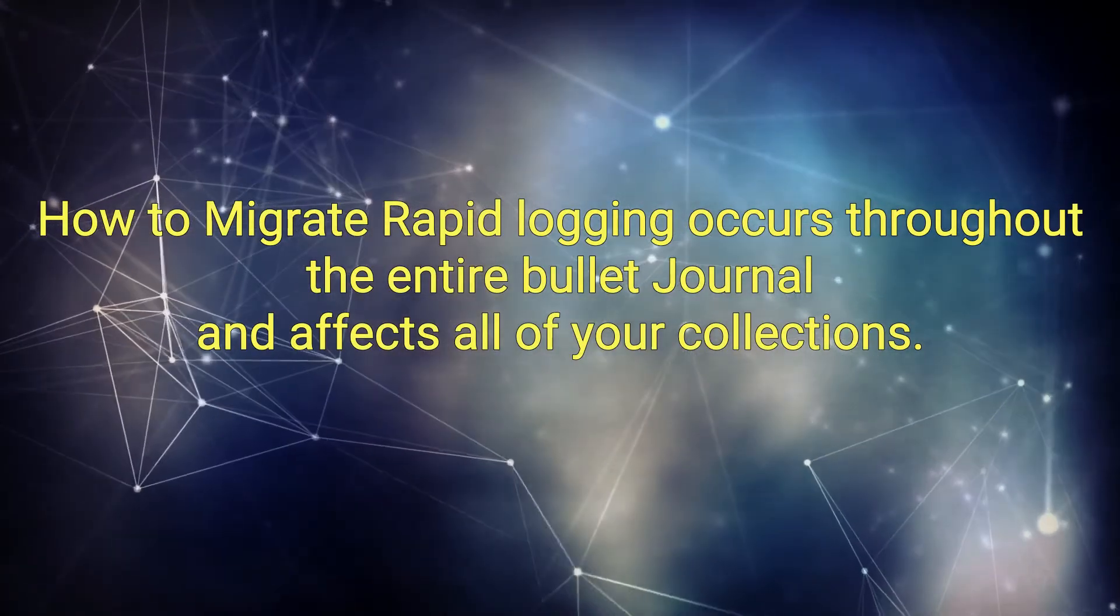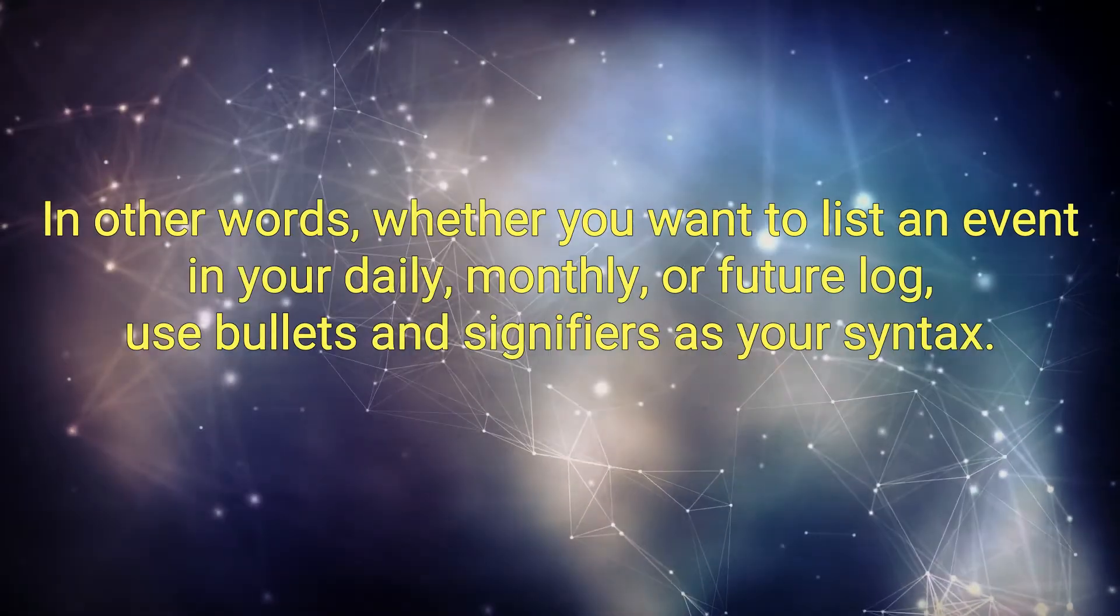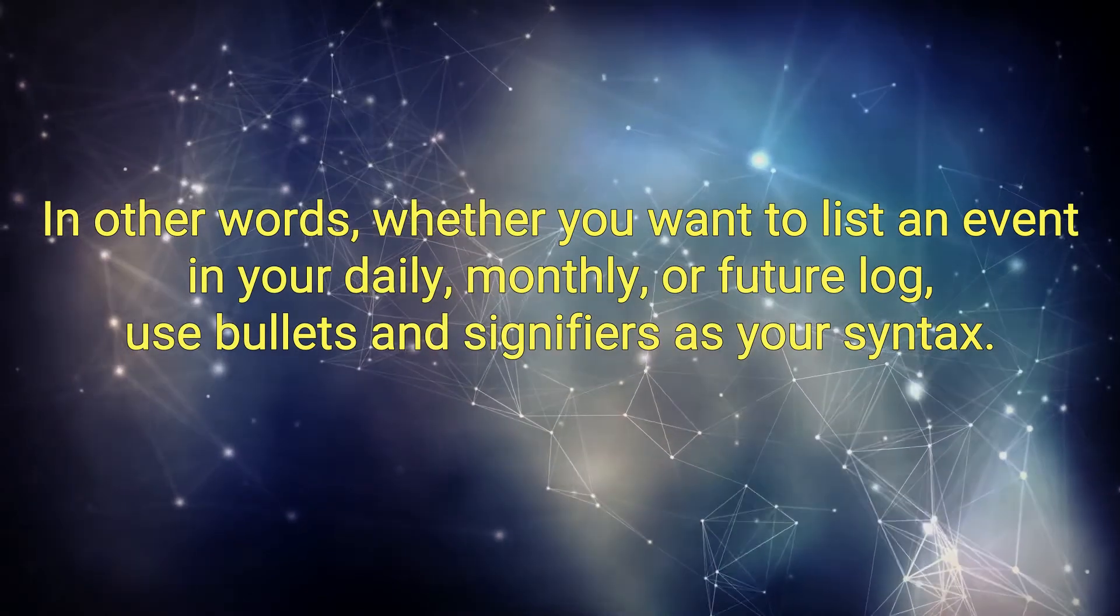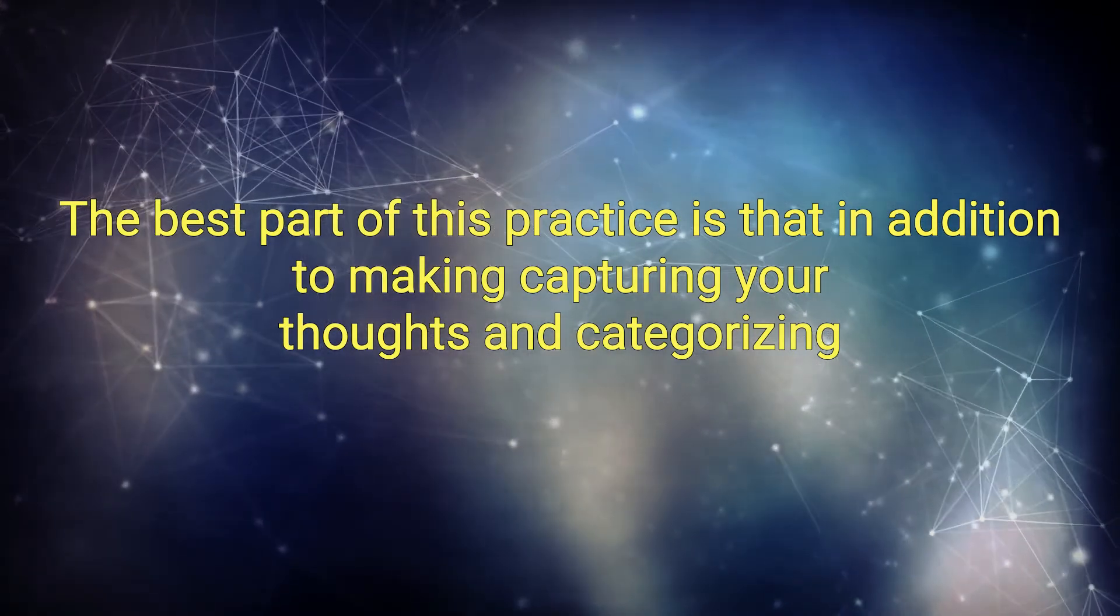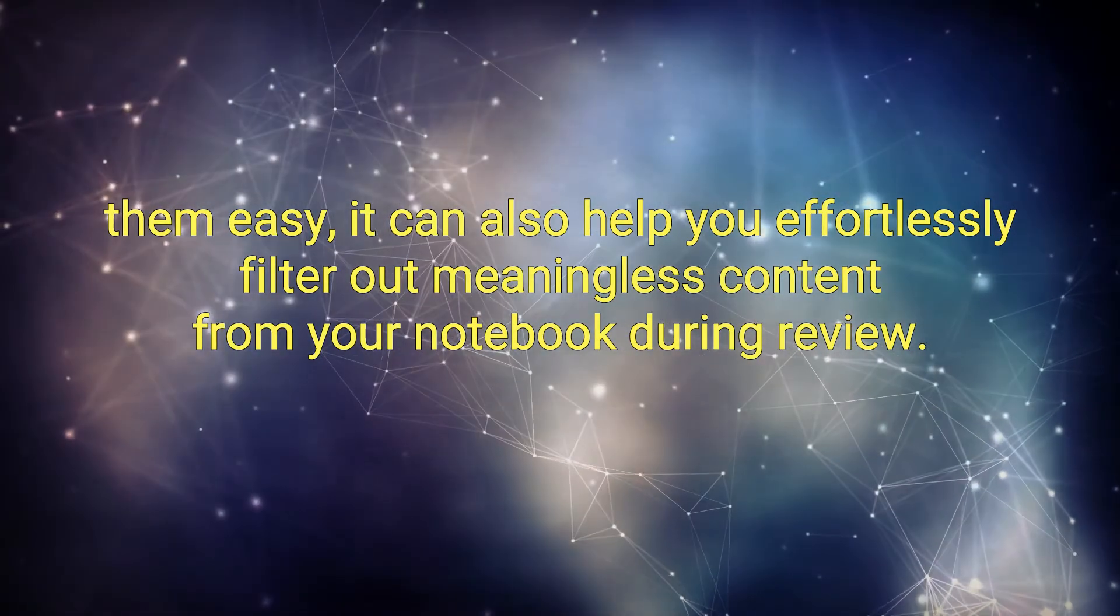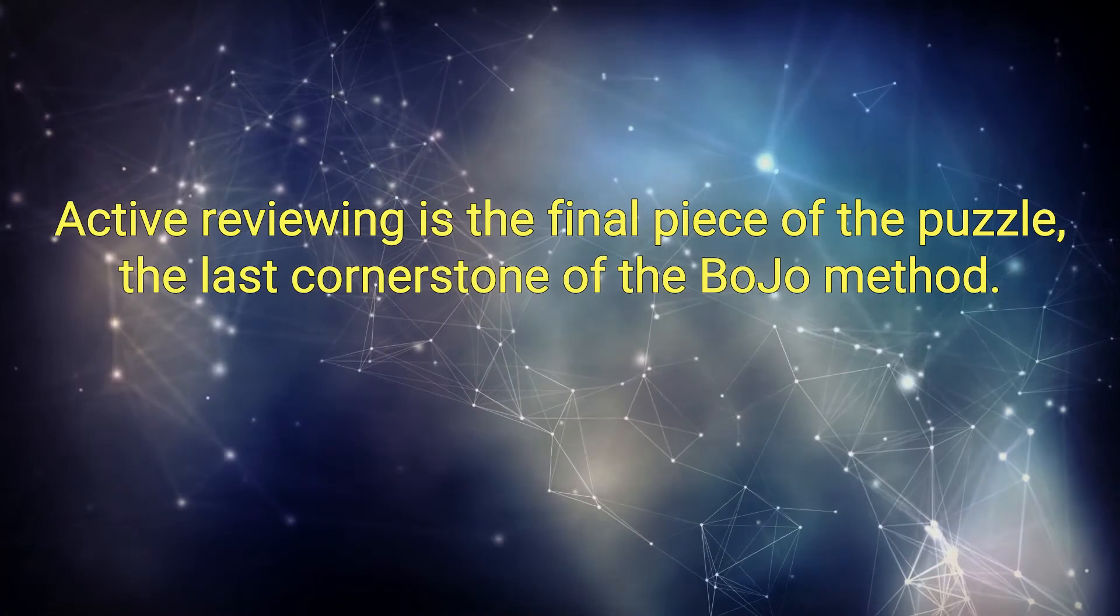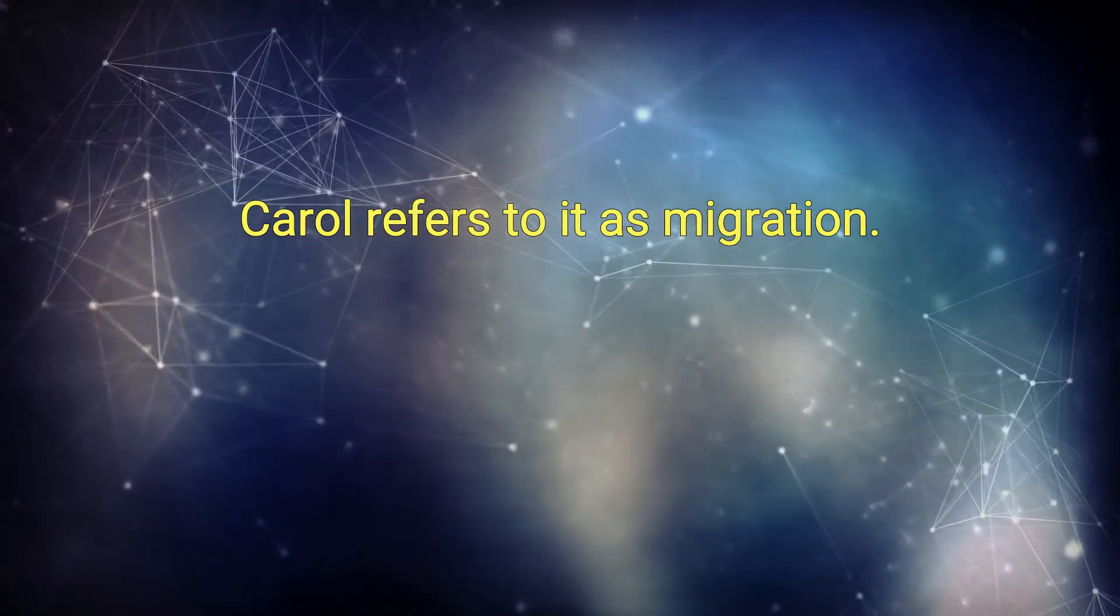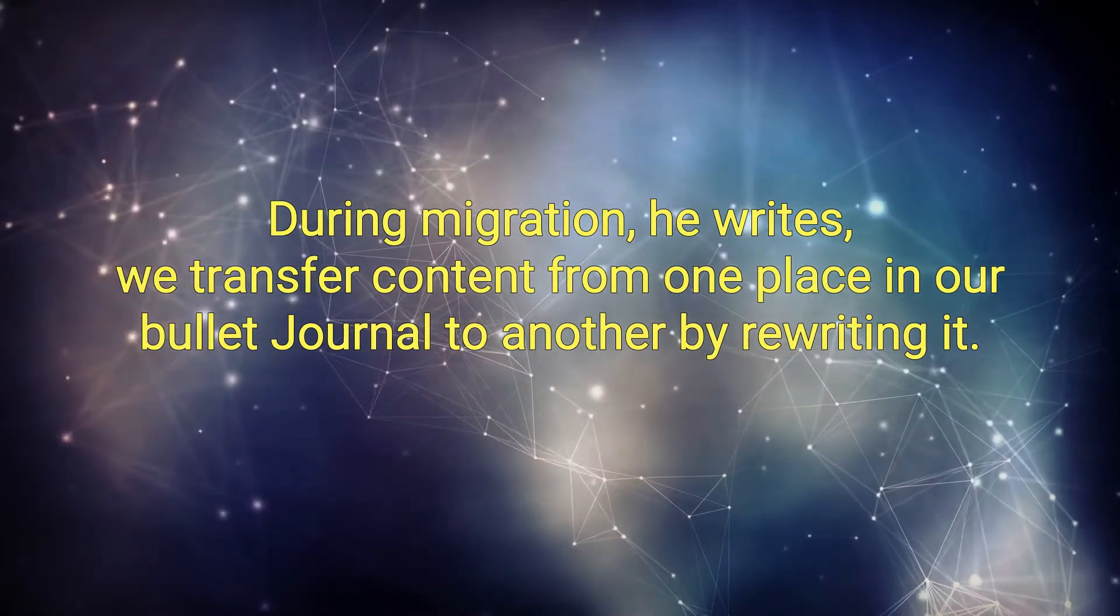How to migrate. Rapid logging occurs throughout the entire bullet journal and affects all of your collections. In other words, whether you want to list an event in your daily, monthly, or future log, use bullets and signifiers as your syntax. The best part of this practice is that, in addition to making capturing your thoughts and categorizing them easy, it can also help you effortlessly filter out meaningless content from your notebook during review. Active reviewing is the final piece of the puzzle, the last cornerstone of the Bujo method. Carroll refers to it as migration. During migration, he writes, we transfer content from one place in our bullet journal to another by rewriting it.